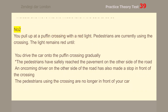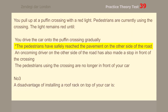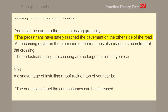Number 2. You pull up at a puffin crossing with a red light. Pedestrians are currently using the crossing. The light remains red until the pedestrians have safely reached the pavement on the other side of the road.